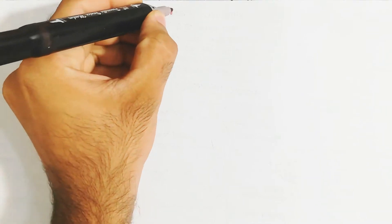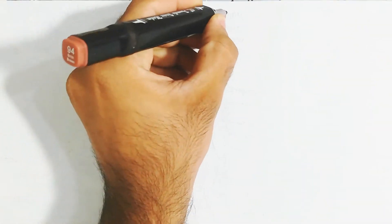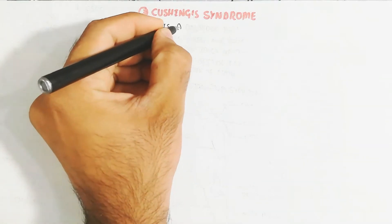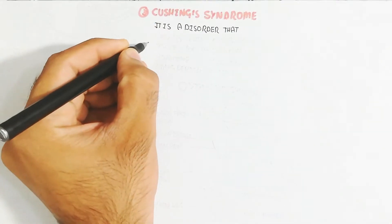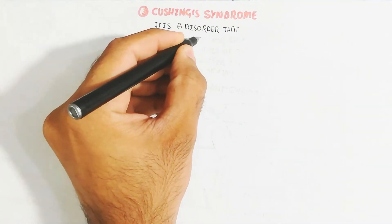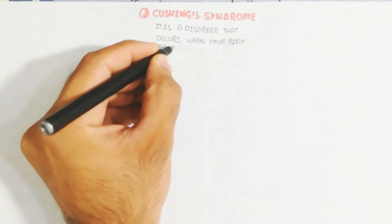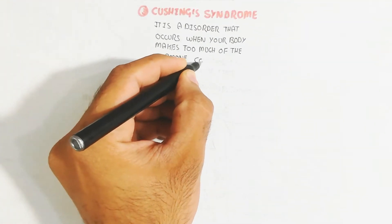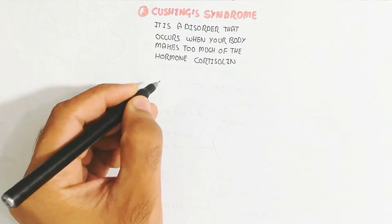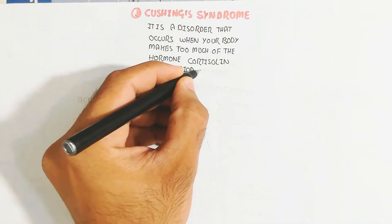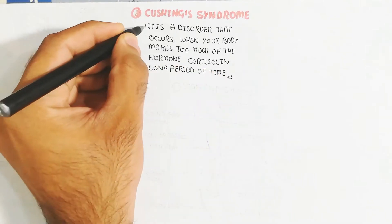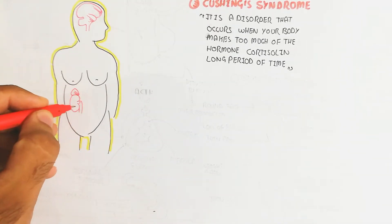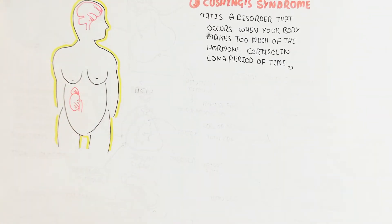Hello. In this video we will discuss Cushing's disease. Cushing's disease is a disorder that occurs when your body makes too much of the hormone cortisol over a long period of time. This chronic cortisol production will lead to cause Cushing's disease, and we will learn all these things in this video.